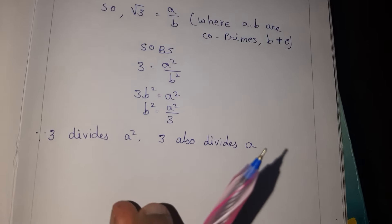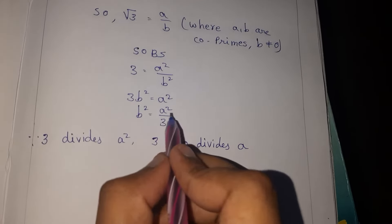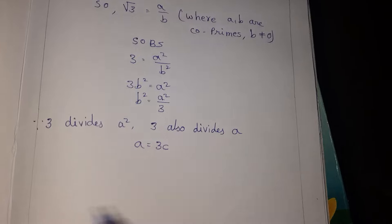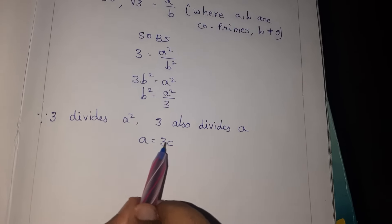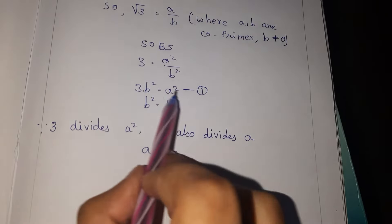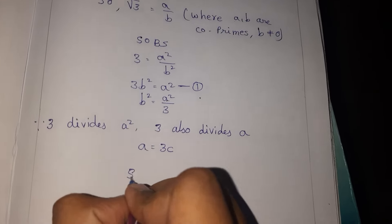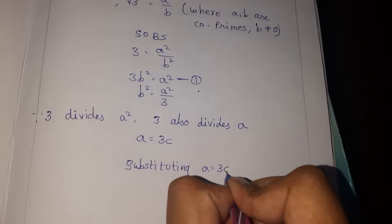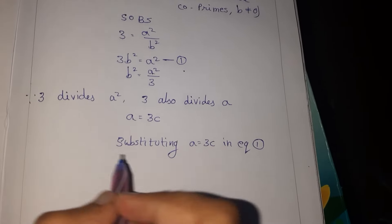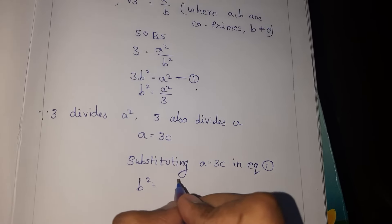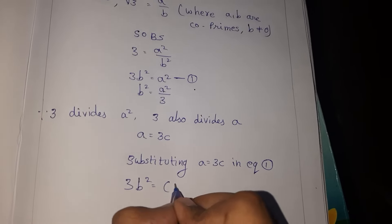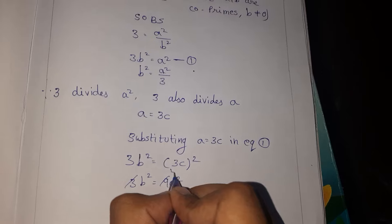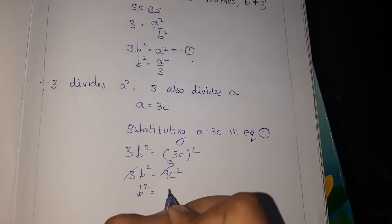Next, let a equal 3c. Substituting a equals 3c into equation 1: 3b² equals 3c whole squared, which gives 3b² equals 9c². Dividing both sides by 3, we get b² equals 3c².